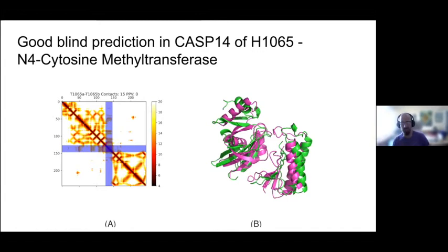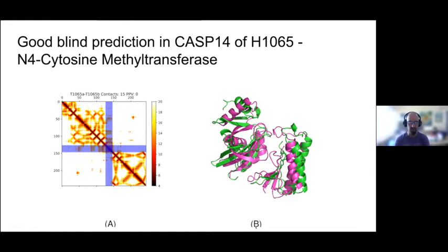We had at least one completely blind prediction at CASP where we managed to get the best model, using this approach plus some manual intervention. We only predict about 50 contacts but it produces quite a good docking model — not perfect, but quite good. It shows we can do this blindly in some cases.